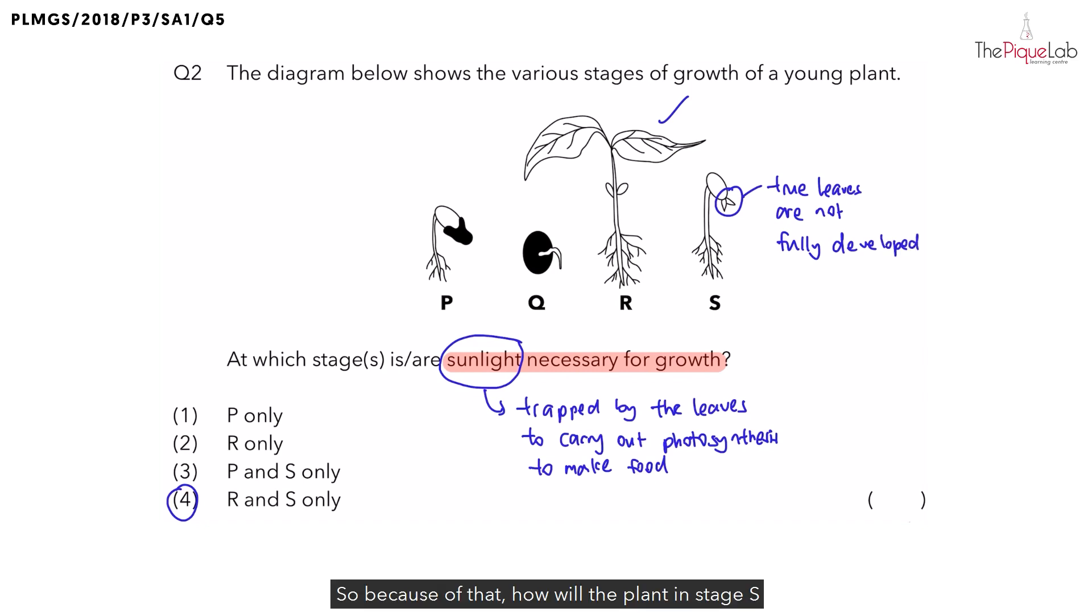Because of that, how will the plant in stage S get its food? Instead of getting its food through the process of photosynthesis, the plant in stage S would have to depend on the seed leaves for food.